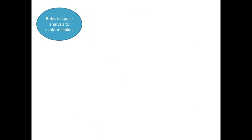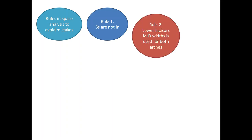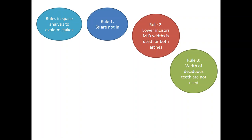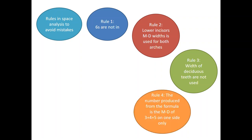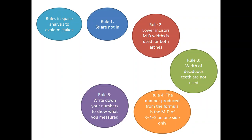Important rules to follow when applying space analysis: Rule 1 — permanent molars should not be involved in the space analysis. Rule 2 — the mesiodistal width of deciduous teeth should not be measured; it's not relevant, you're going to lose them anyway. Rule 4 — the number produced from the formula represents the mesiodistal width of the canine and premolars on one side only, so you have to multiply it by 2.